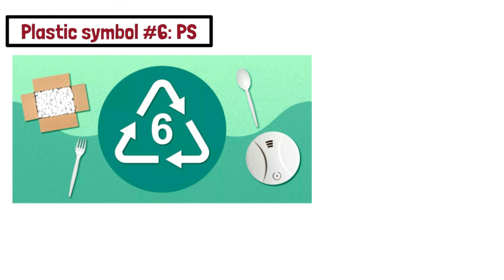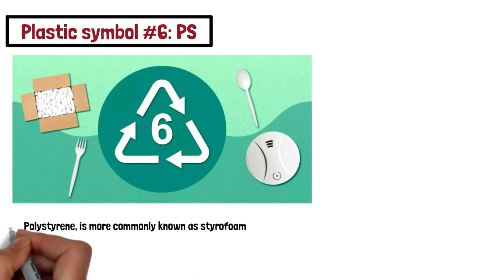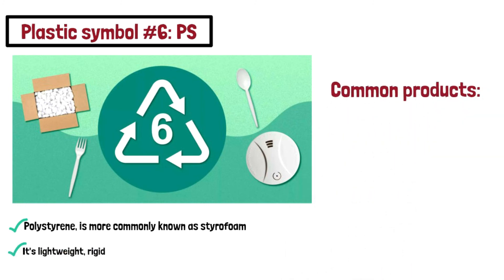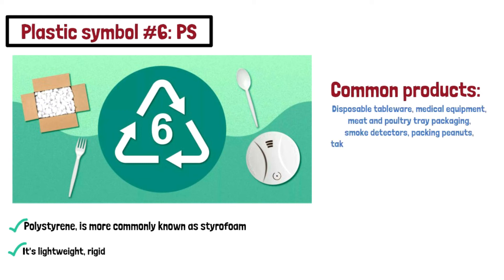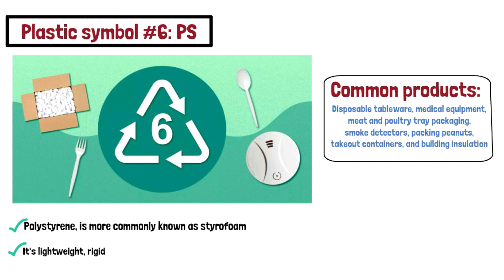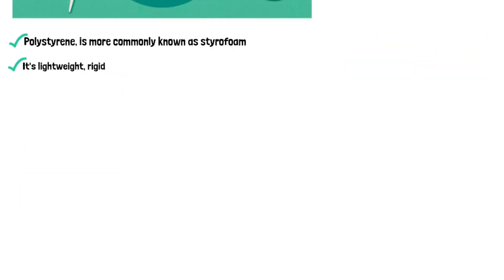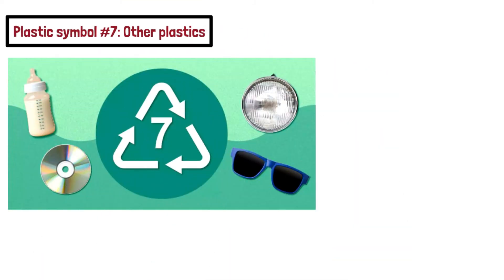The recycling symbol with number 6 indicates PS — polystyrene. It is most commonly known as styrofoam because it's lightweight and rigid. Common products of polystyrene include disposable tableware, medical equipment, meat and produce trays, packaging, smoke detectors, packing peanuts, takeout containers, and building insulation. If you see a recycling symbol with the number 6, the product is made from polystyrene.